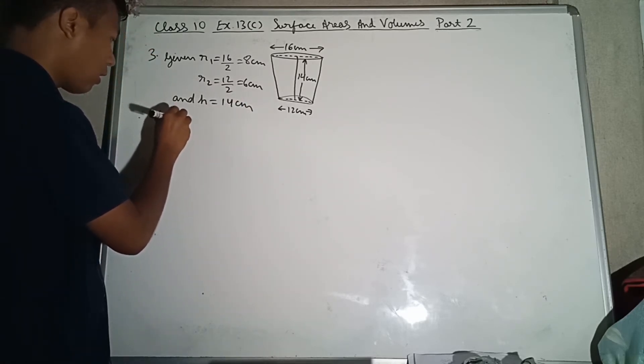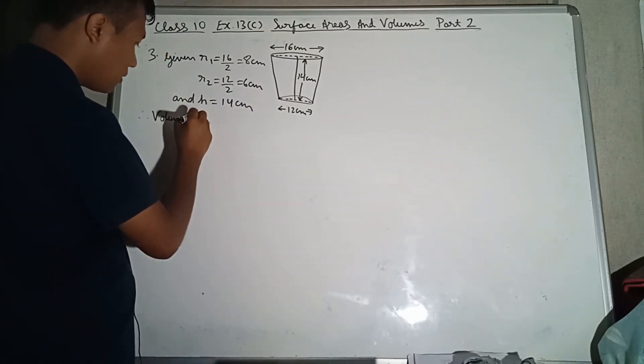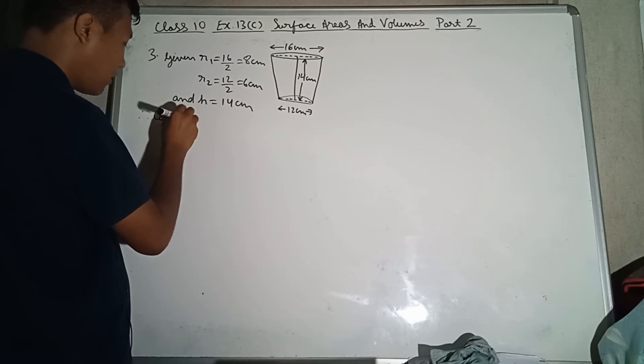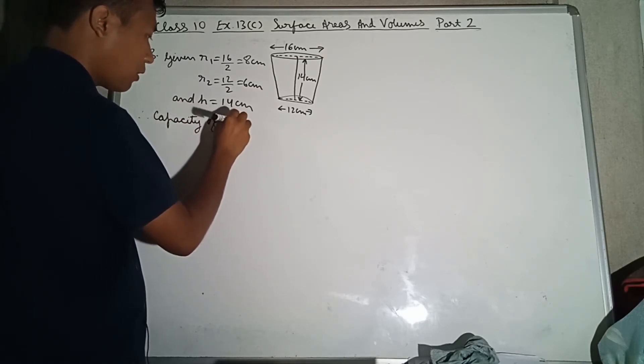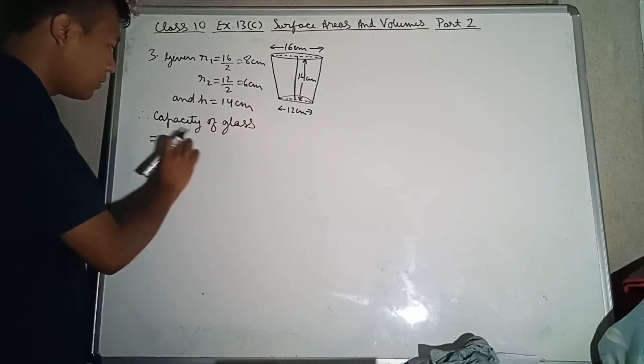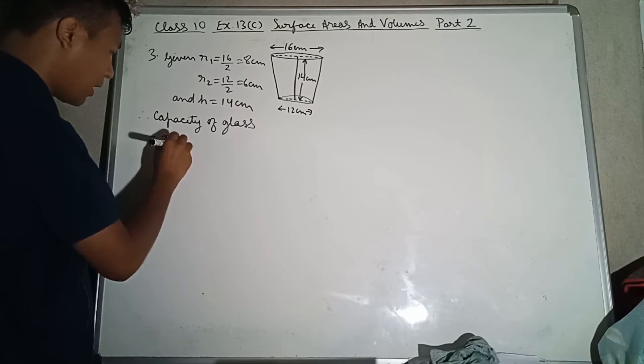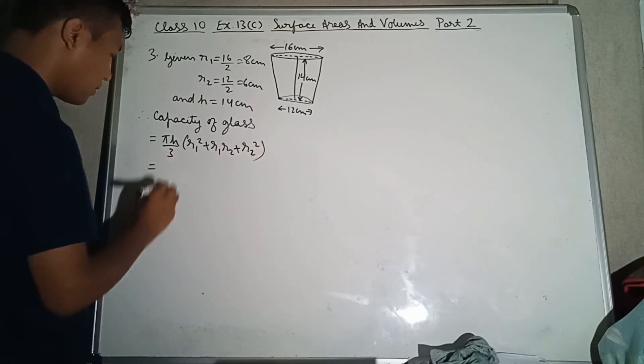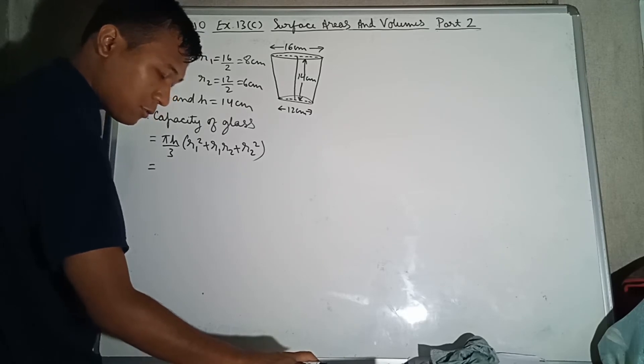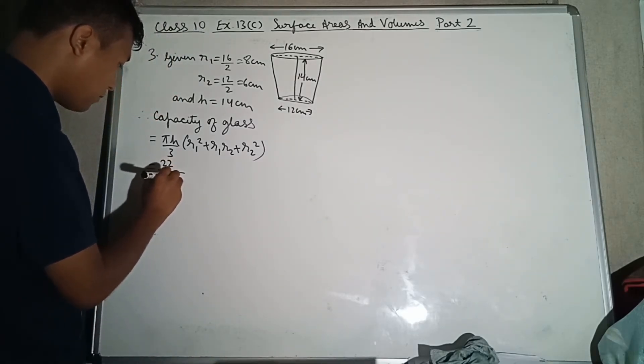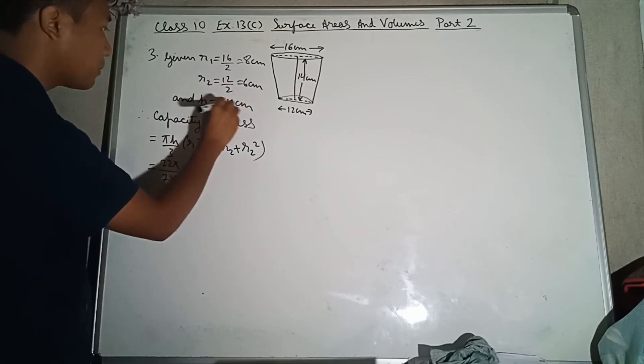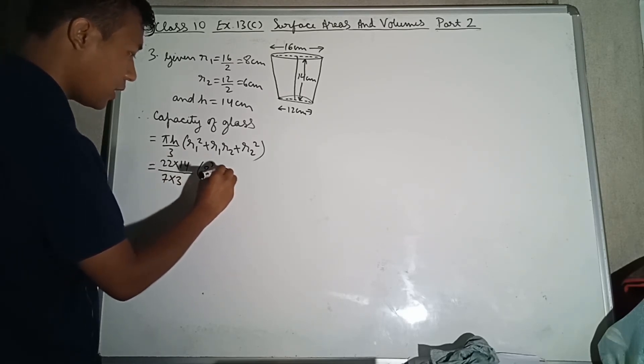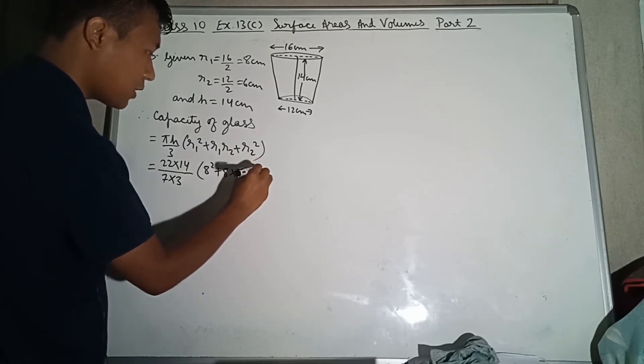Therefore, capacity of glass is the volume of glass. Volume equals πH by 3 into (R1² + R1R2 + R2²). Using π value 22 by 7, this equals 22 by 7 into H which is 14, into (R1 which is 8 squared, plus R1 which is 8 into R2 which is 6, plus R2 squared which is 6 squared).